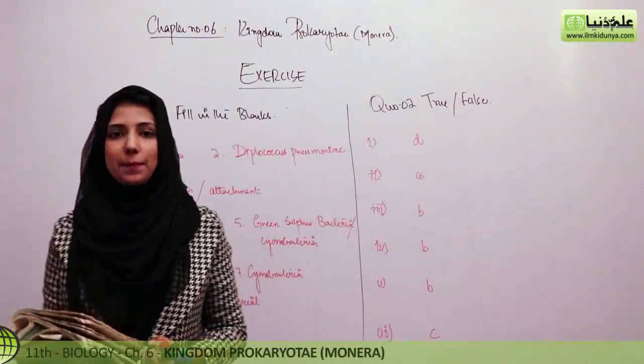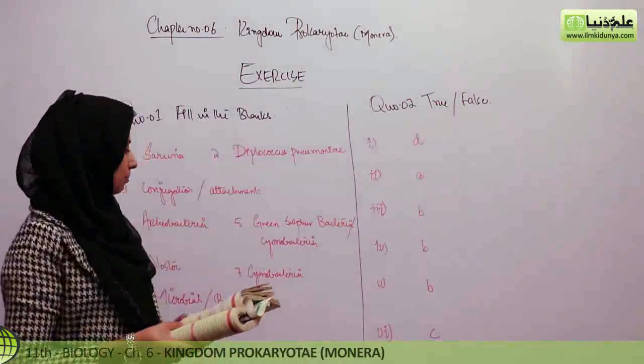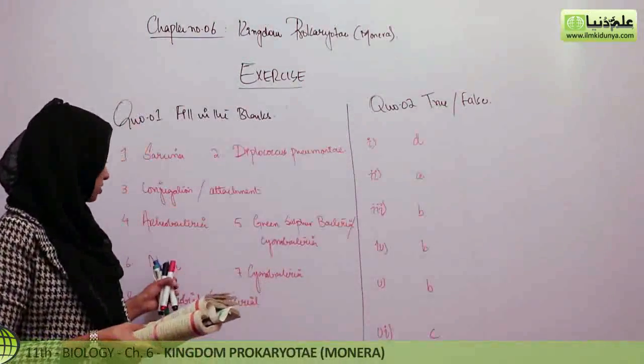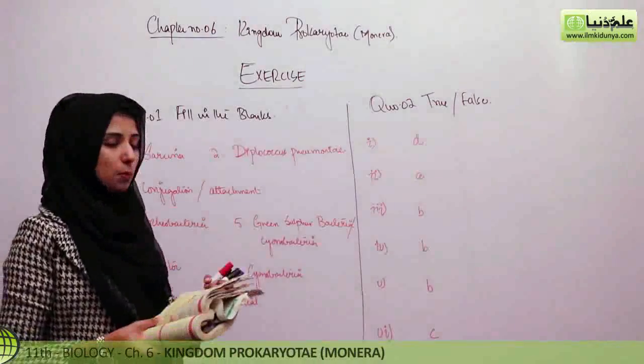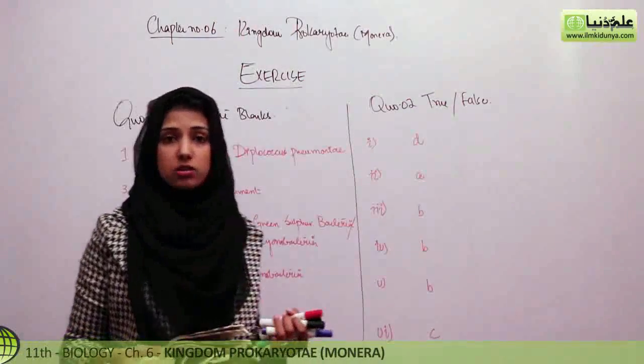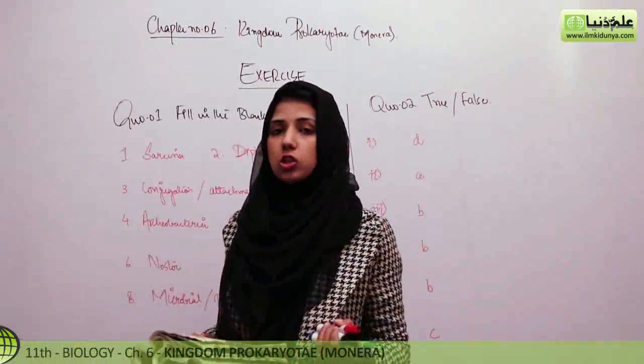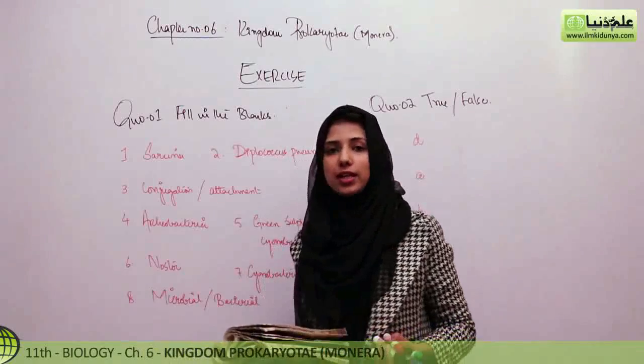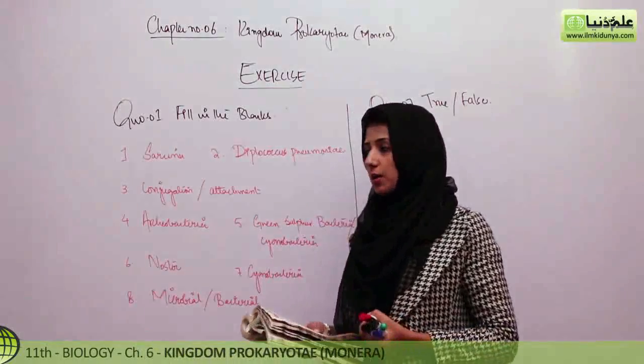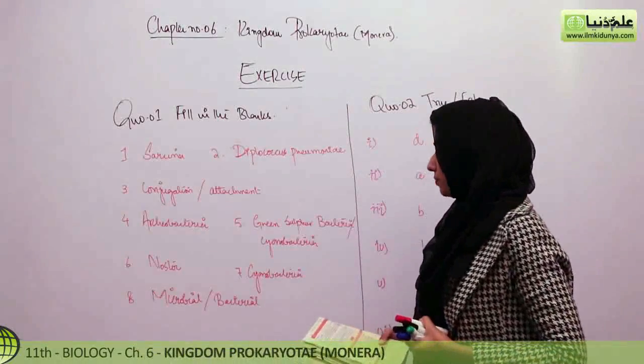Nostoc is a cyanobacterium. Here you can give the example of any cyanobacterium. Nostoc is one; in the book, Anabena is there, Oscillatoria is there — these are the four examples of blue-green algae given in the book.